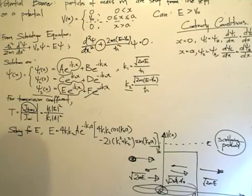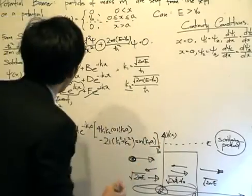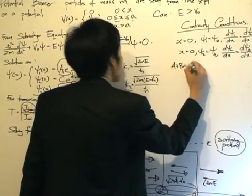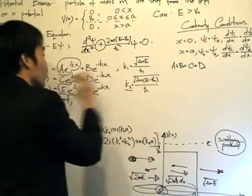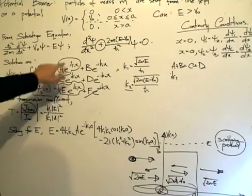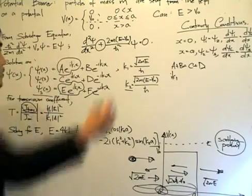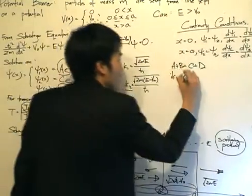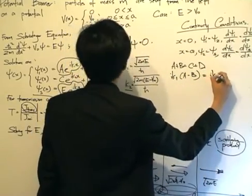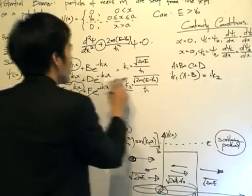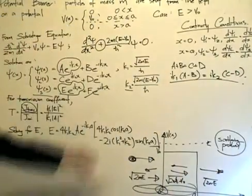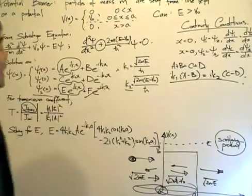I'm not going to rearrange the terms because it takes way too long, but the first one — always substitute zero inside here — we will get a plus b equals c plus d. The second one: I just want to bring down the ik1 because when I take the derivative of psi 1, I differentiate the exponential and bring the argument down. So I'll get ik1 times (a minus b) equals ik2 times (c minus d). These are the continuity conditions when we apply x equals 0.